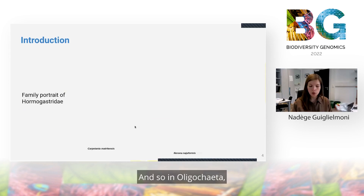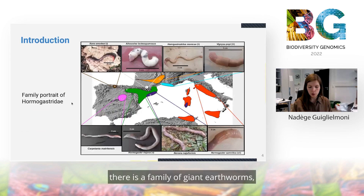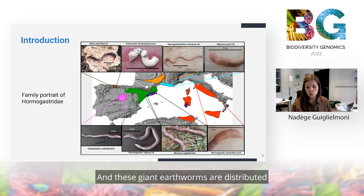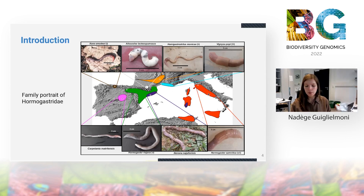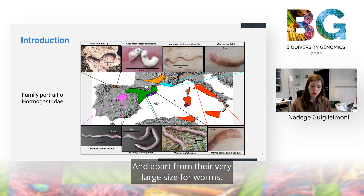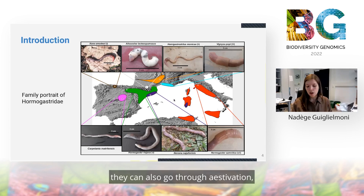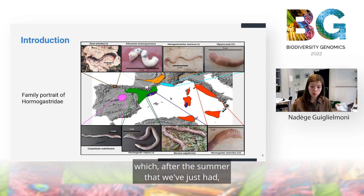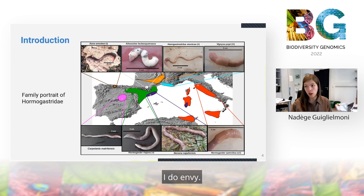Within Oligochaeta, there is a family of giant earthworms, the family Hormogastridae. These giant earthworms are distributed all around the Mediterranean Sea. Apart from their very large size for worms, they can also go through estivation during the hottest months of the year — which, after the summers we've just had, I do envy.